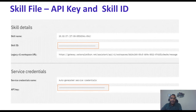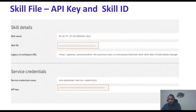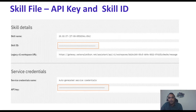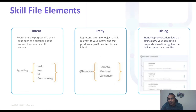To create a skill, you log in to IBM Watson, create a resource, and create a skill file. The skill file gives you a skill ID and an API key — these are used in your chatbot. The skill is also called the workspace.